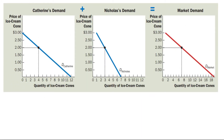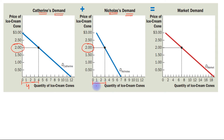The graph in this figure shows the demand curves that correspond to the demand schedules. At a price of $2, Katherine's demand is four ice cream cones. At a price of $2, Nicholas's demand is three ice cream cones. And at this price, the total market demand is four plus three, which is seven ice cream cones.